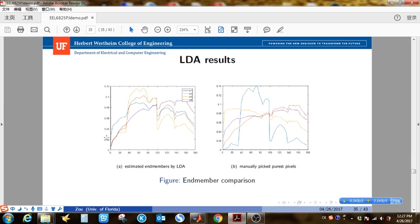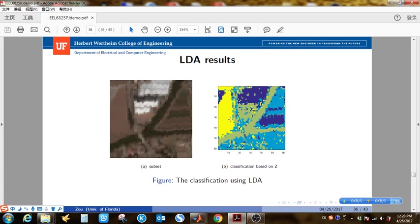So first I run LDA to estimate the topic assignment for each word, which is end-member assignment for each pixel. So this is actually the classification.